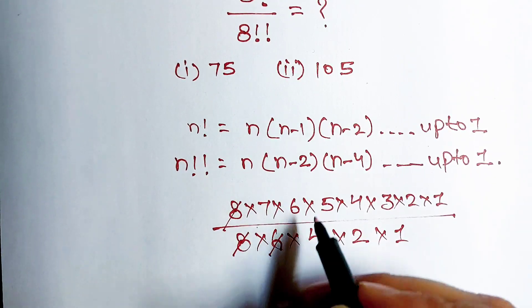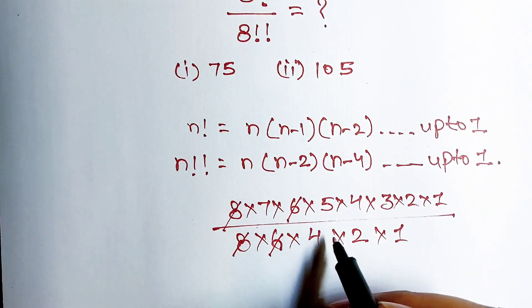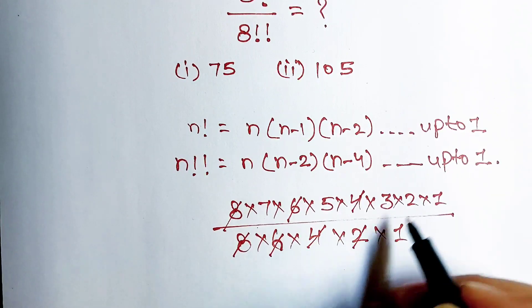Now this 8 will cancel out this 8, this 6 will cancel out this 6, this 4 cancel out this 4, this 2 cancel out this 2.